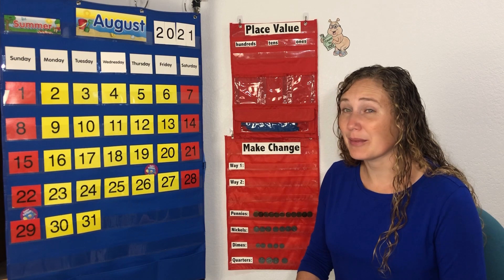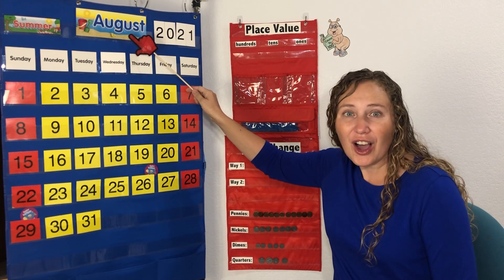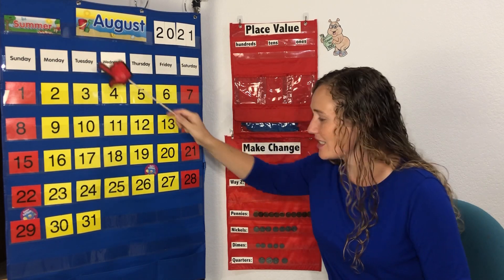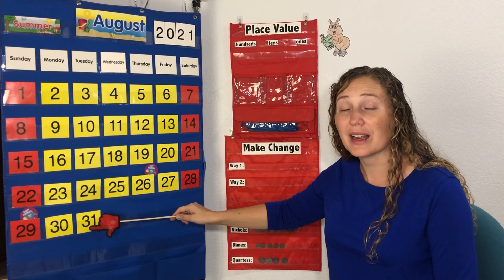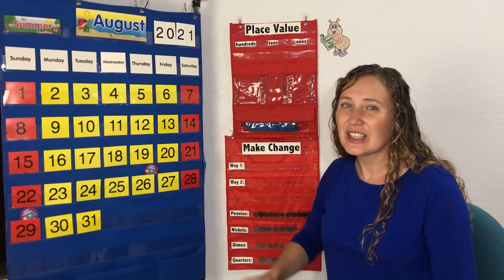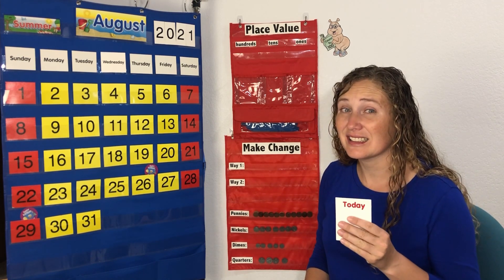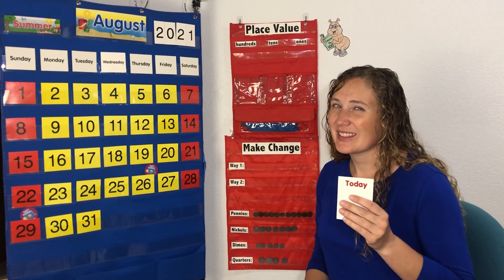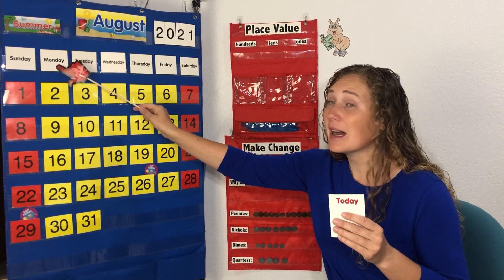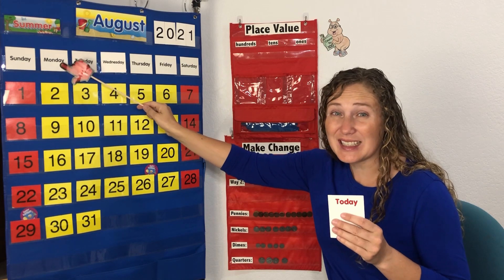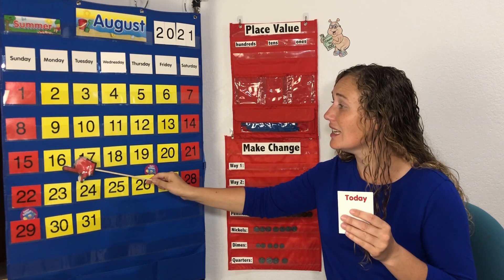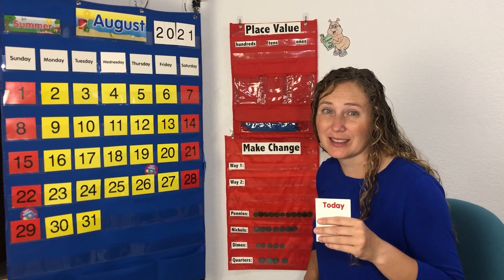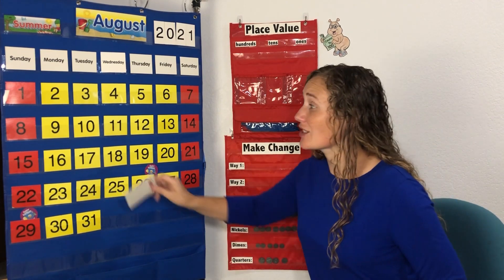We're in the month of August right now. August is in the season of summer. August has 31 days in it. Do you know what today is? Today is Monday, August 16th, 2021. Do you know what yesterday was?